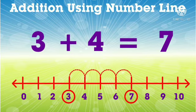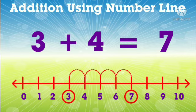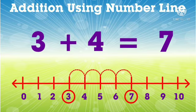From 3 we will move 4 steps to the right. Then we reached at the point 7. So you can write 3 plus 4 is equal to 7. This is the way we are adding numbers using number line.